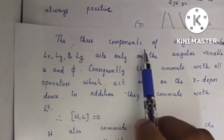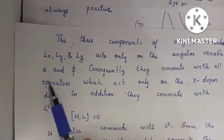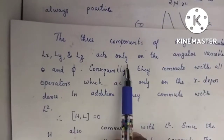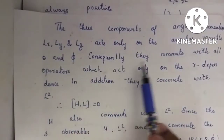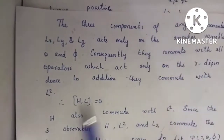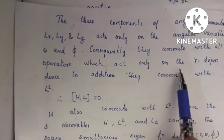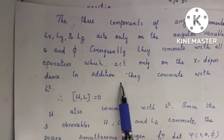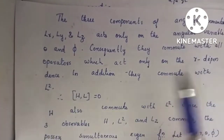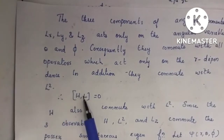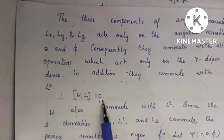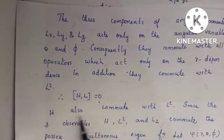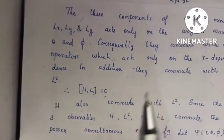The three components of angular momentum Lx, Ly, Lz act only on the angular variables theta and phi. Consequently, they commute with all operators which act only on the r dependence. In addition, they commute with L-squared. H commutes with Lz, and H also commutes with L-squared.